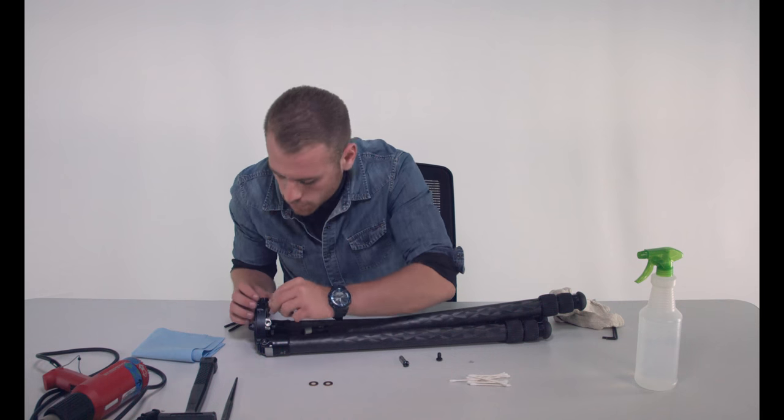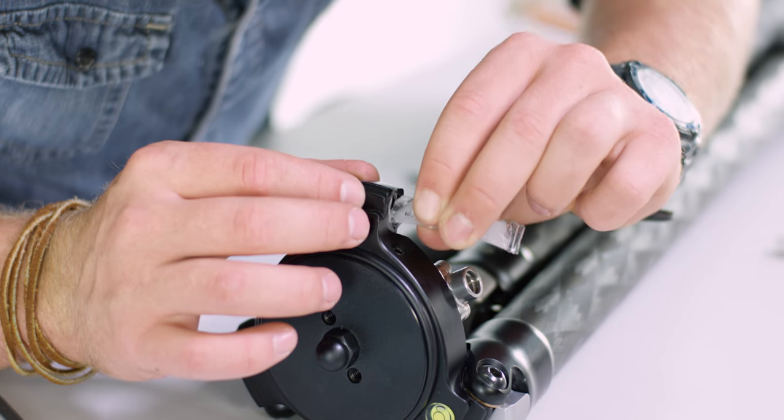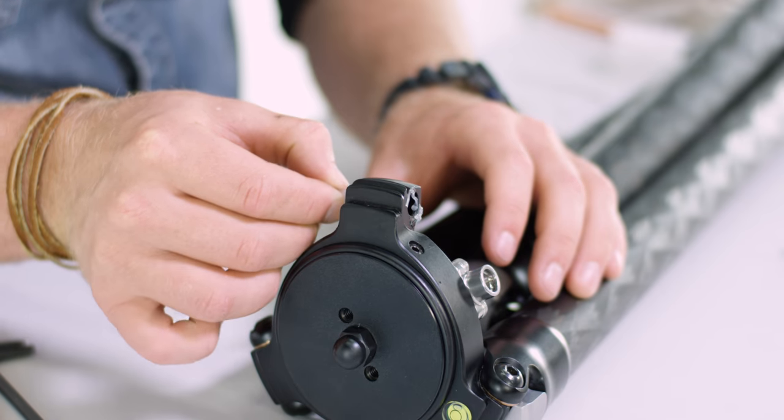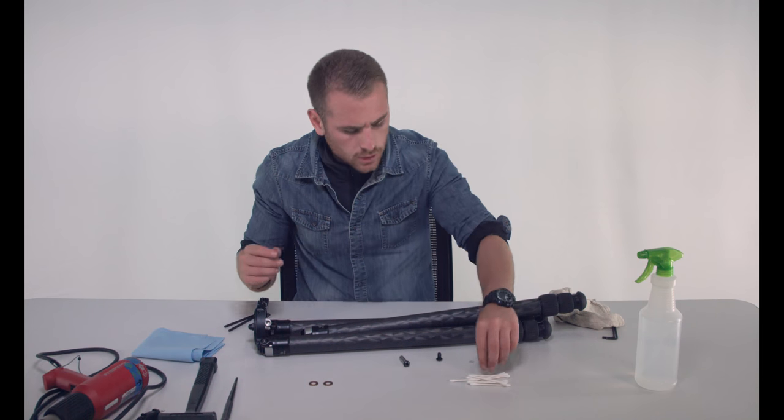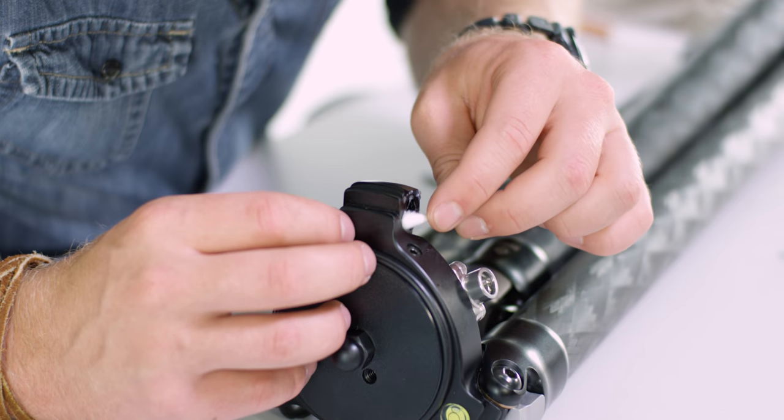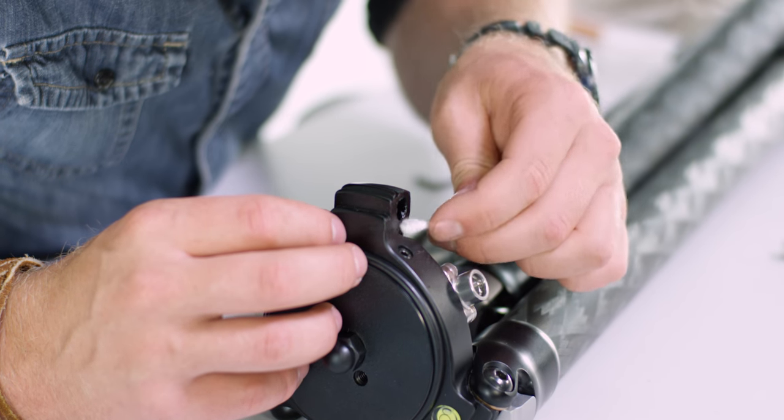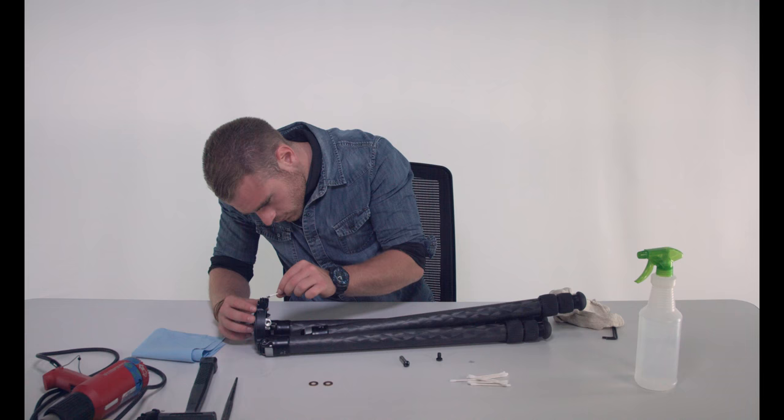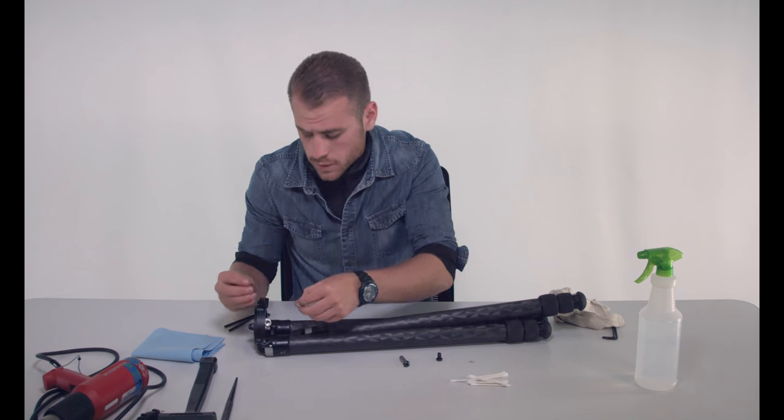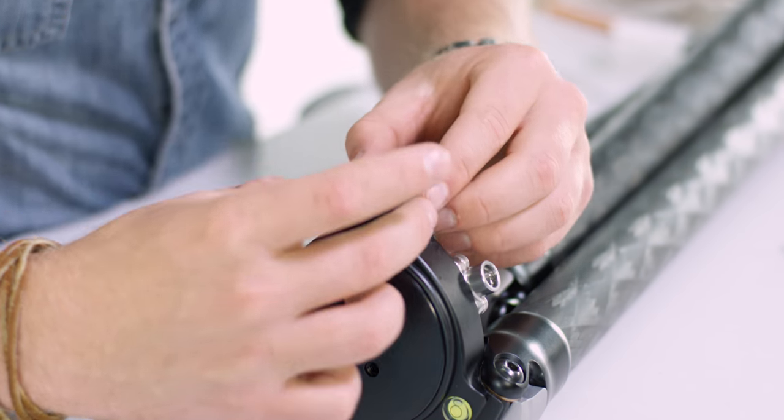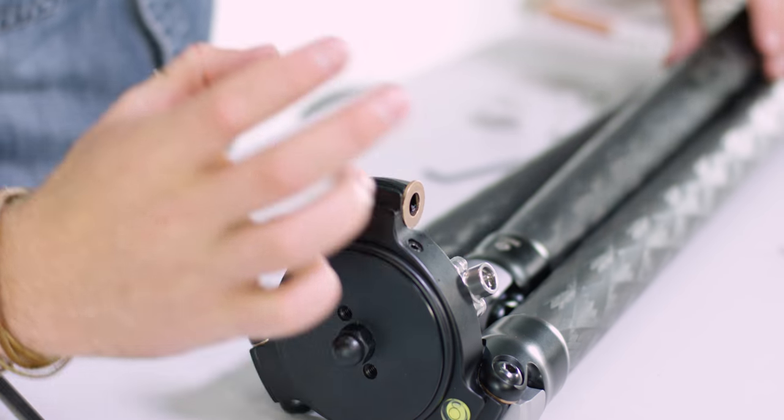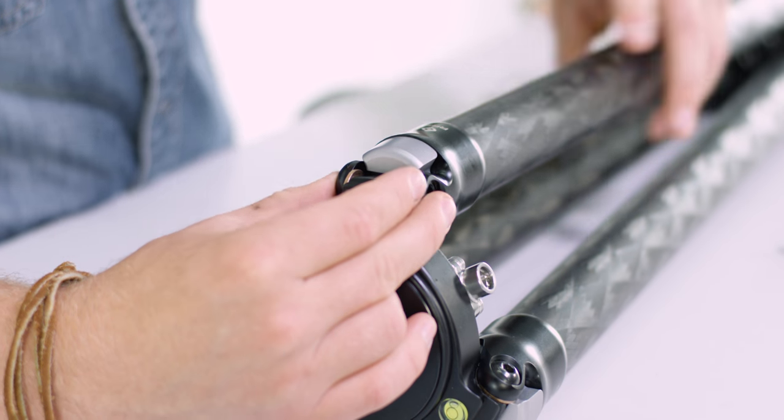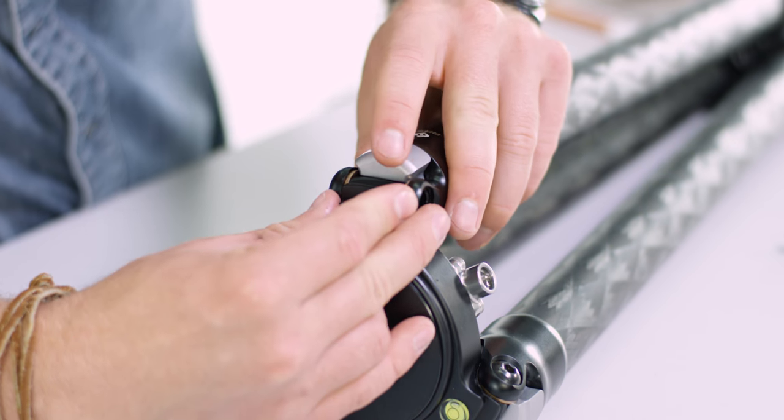Next, apply a little bit of grease to both sides of the apex where the washers will ride. Then take a Q-tip and distribute that grease. Next, take your washers and put them on each side of that apex piece and then slide your leg into place.